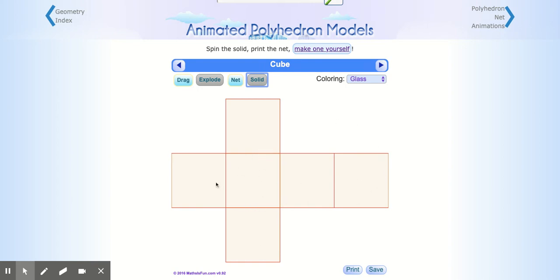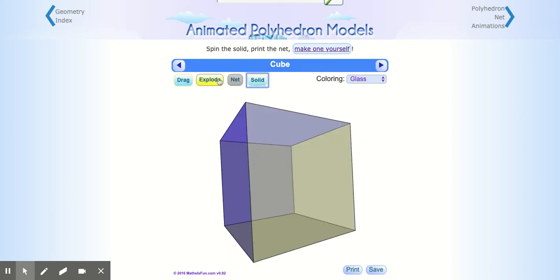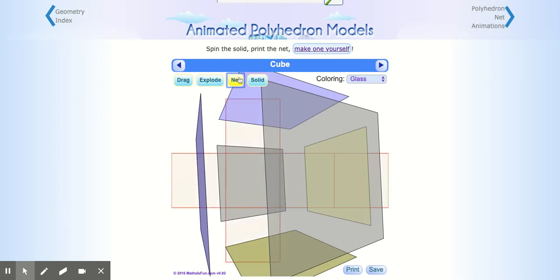Now this is not the only way you could draw a net for a cube, but it is one way that you could do that. You could play with it again. If it makes more sense for you to have the solid or the explosion, whatever you need, you can have all of it in one place to see how to make that net.